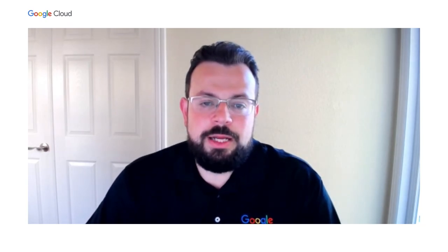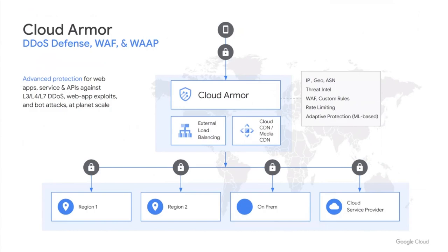Cloud Armor is the DDoS mitigation service and web application firewall on Google Cloud. We are able to protect your web applications and APIs from all manner of DDoS threats, including layer 3 and 4 network and volumetric protocol-based attacks, as well as layer 7 floods, while also functioning as a web application firewall to detect and mitigate web-based threats like the OWASP top 10 web app vulnerability risks, or enforce custom layer 7 filtering policies.